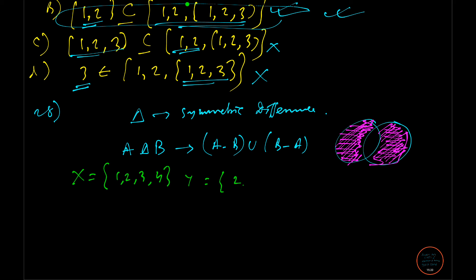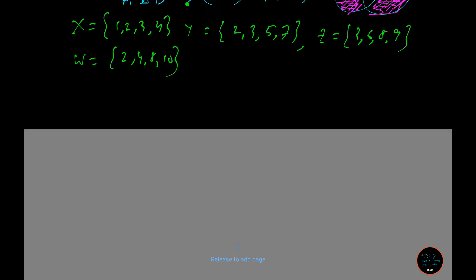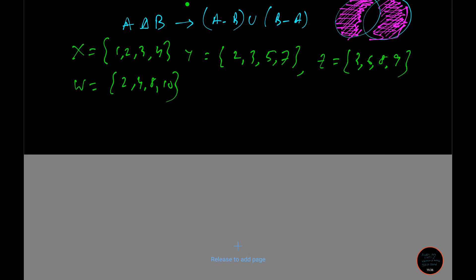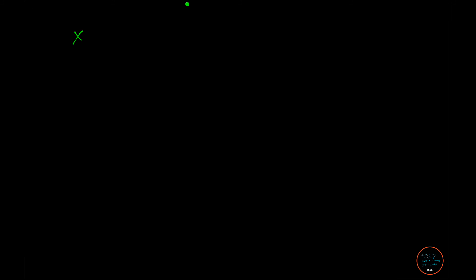So X = {1,2,3,5,7} and Y = {3,5,7} and Z = {2,4,8,10}. And on the basis of this they have asked to find X delta Y delta Z delta W.